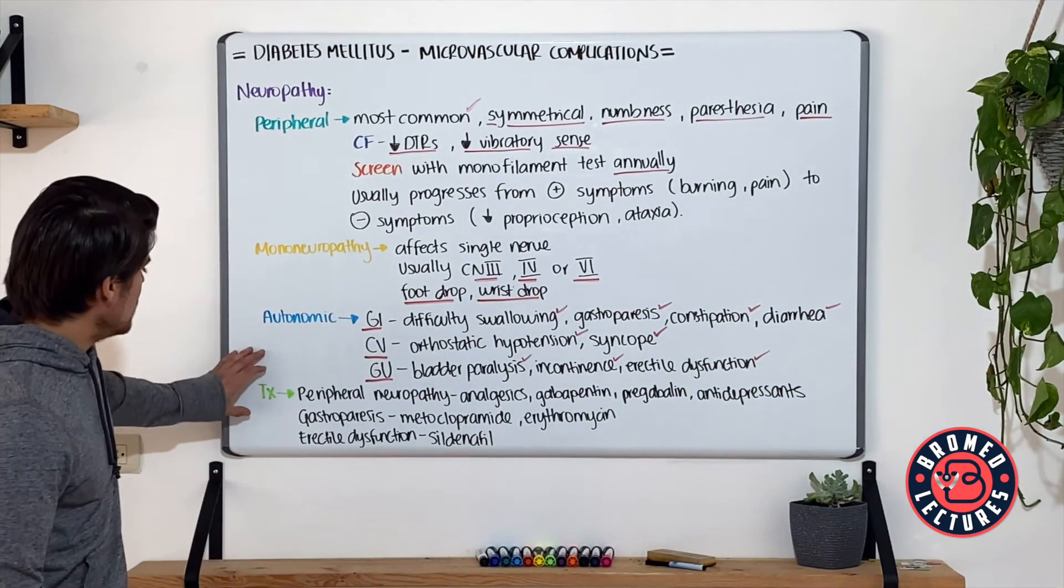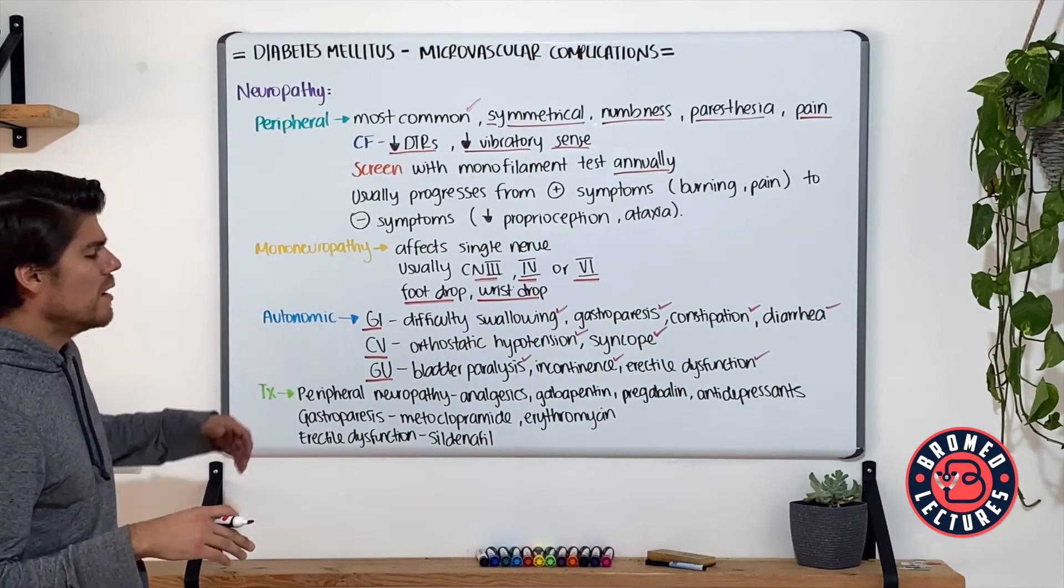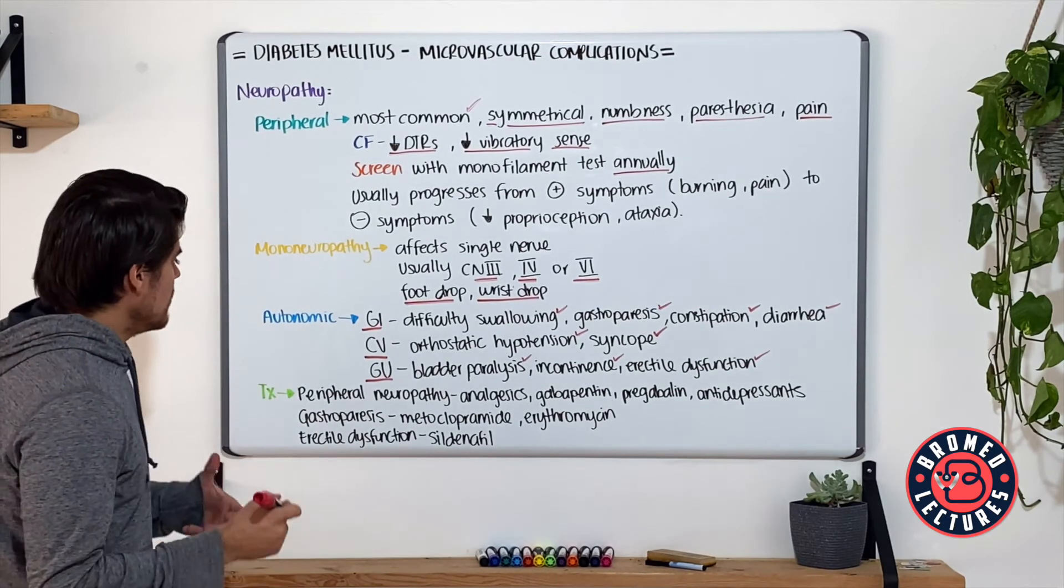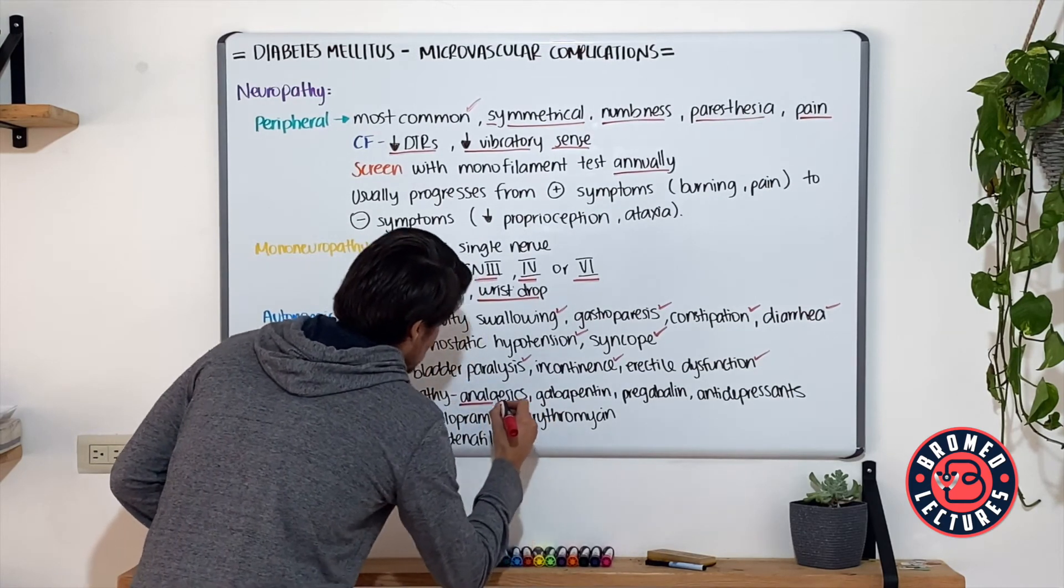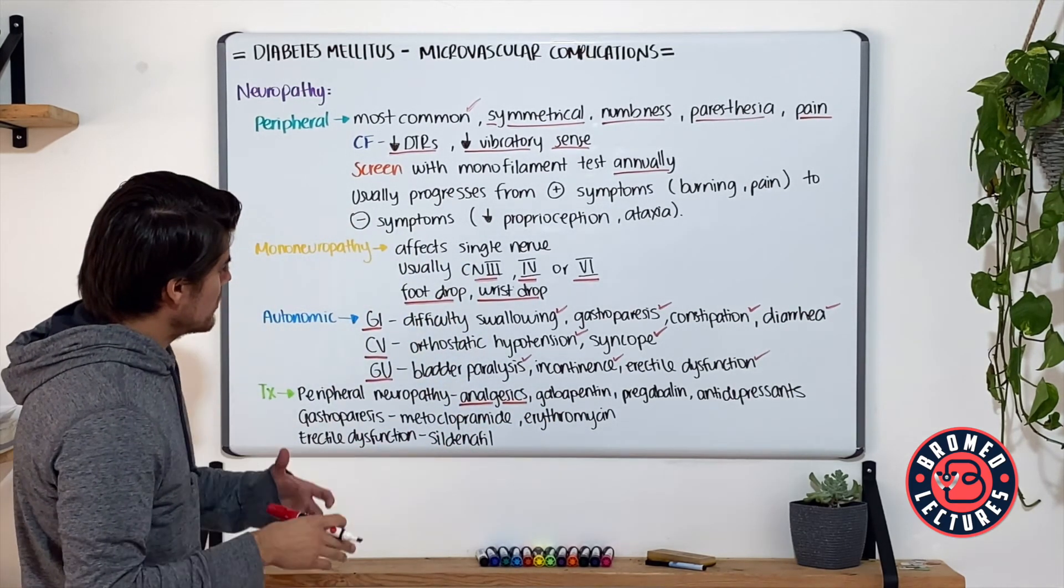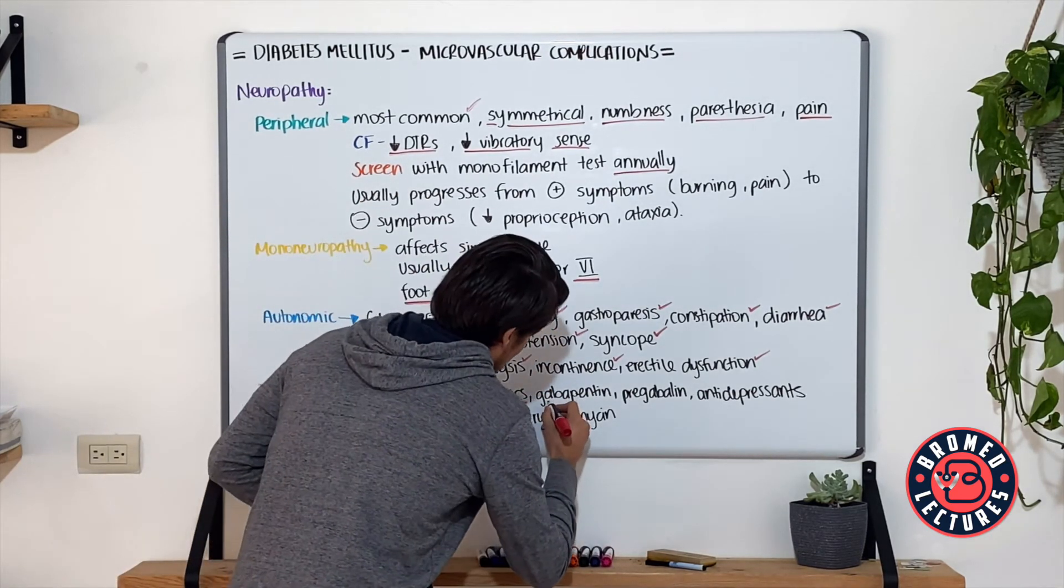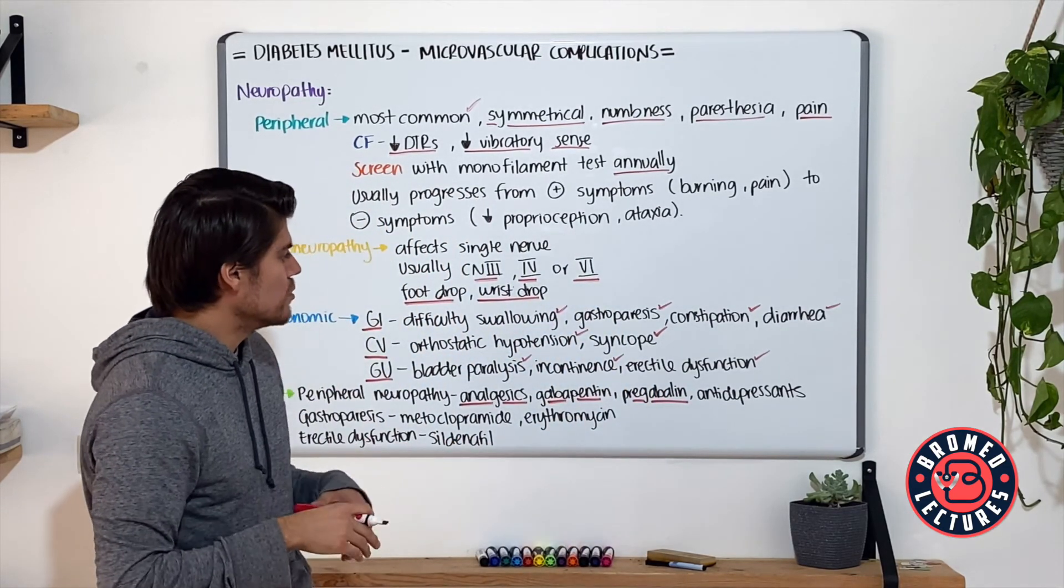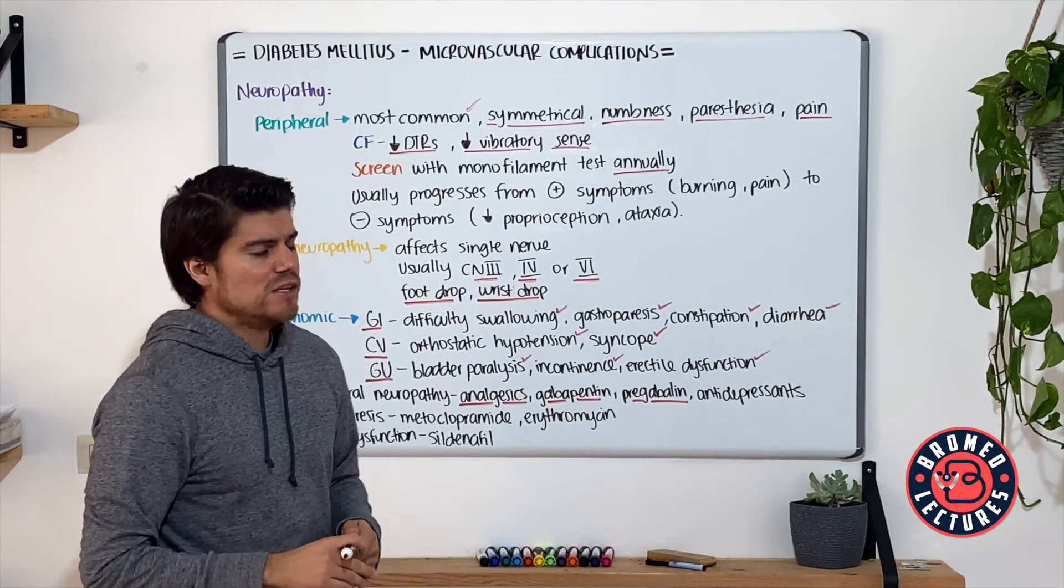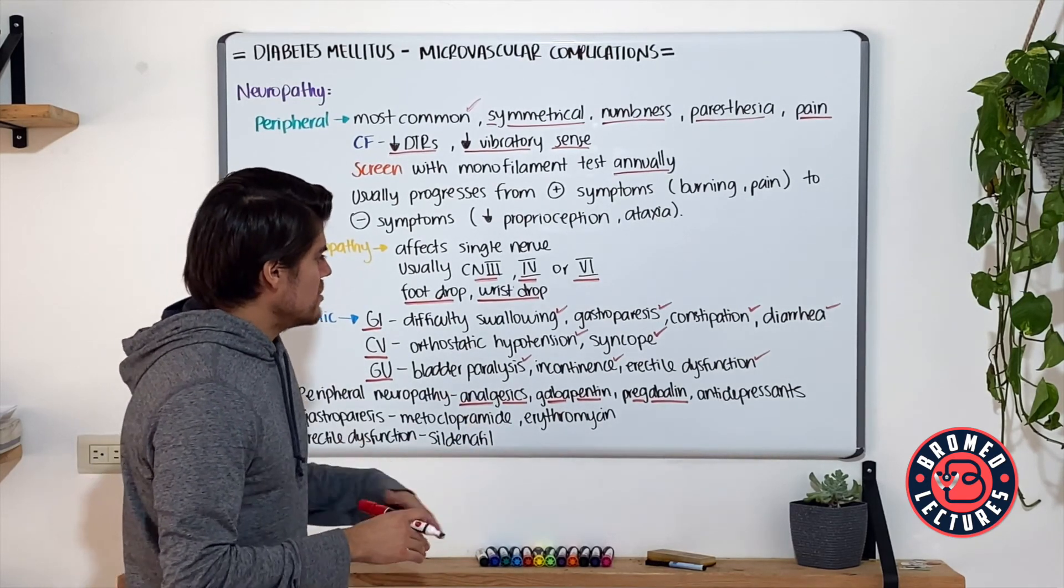For treatment, we have different therapies for the different presentations. For peripheral neuropathy, what we usually do is we have analgesics. Remember these patients are in pain most of the time. So we first have analgesics, and we also have either gabapentin or pregabalin. These medications take a few weeks to have some effect, so do not forget the analgesics and the addition of one of these.